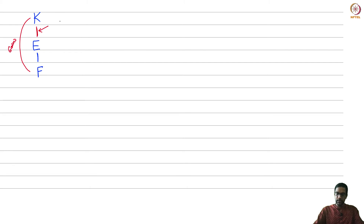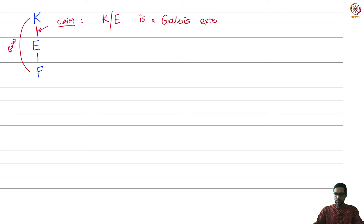Let us draw the extension tower k, E, f. What is given is that k over f is a Galois extension. The first claim: in order to prove K^H equals E, all we really need to show is that k over E is also a Galois extension.